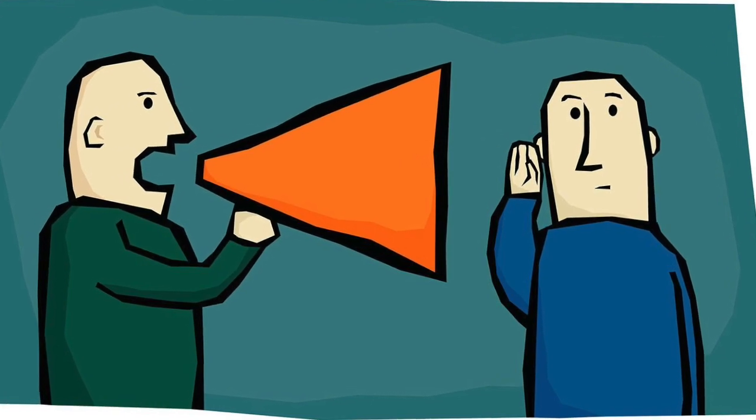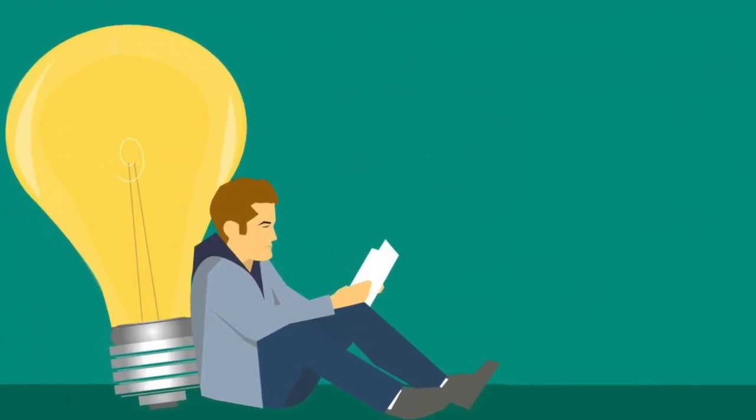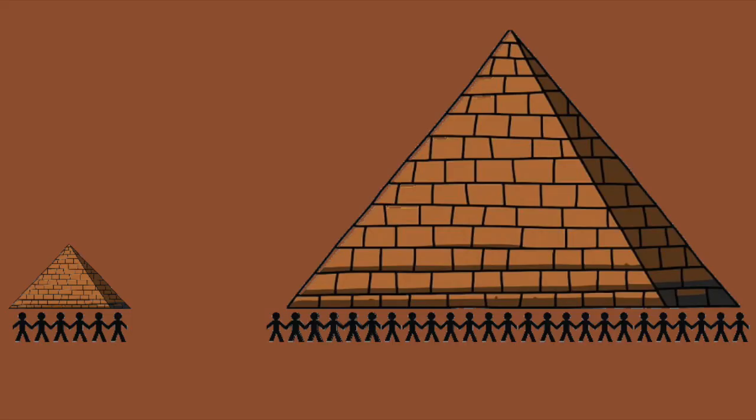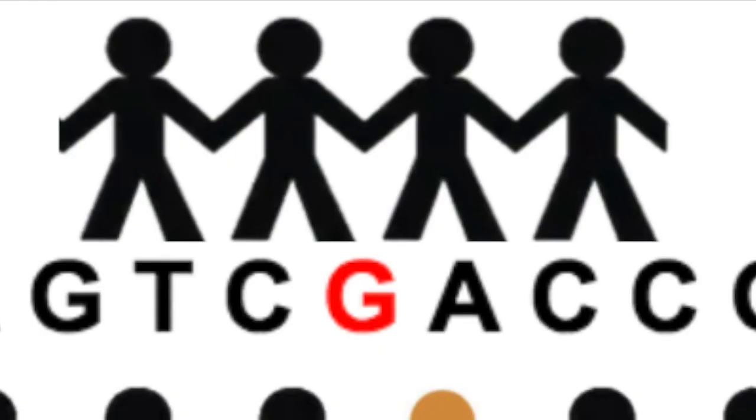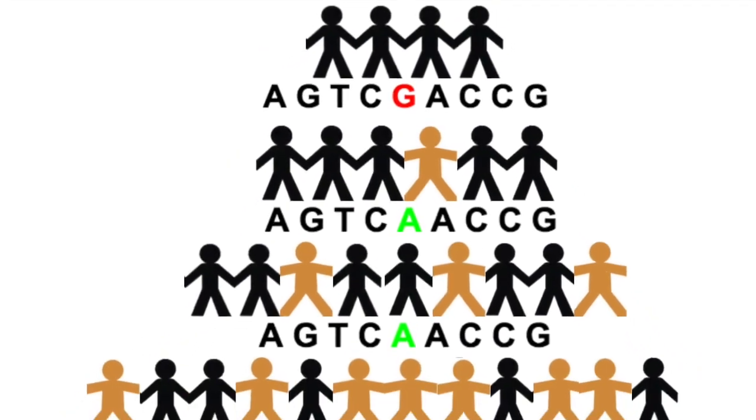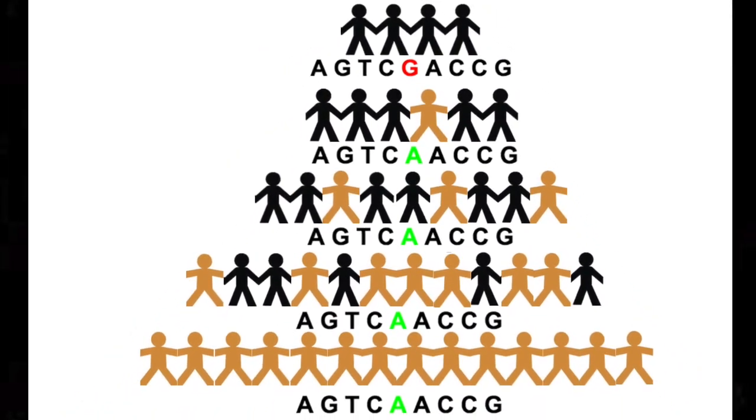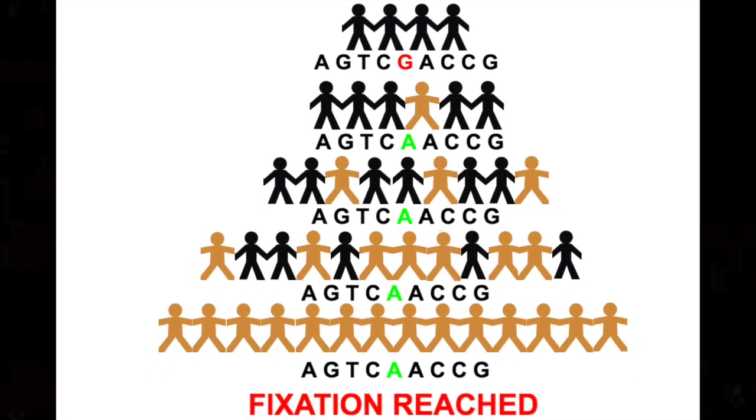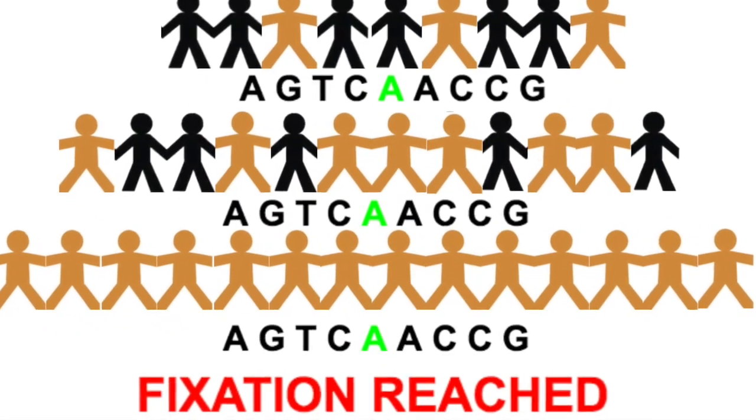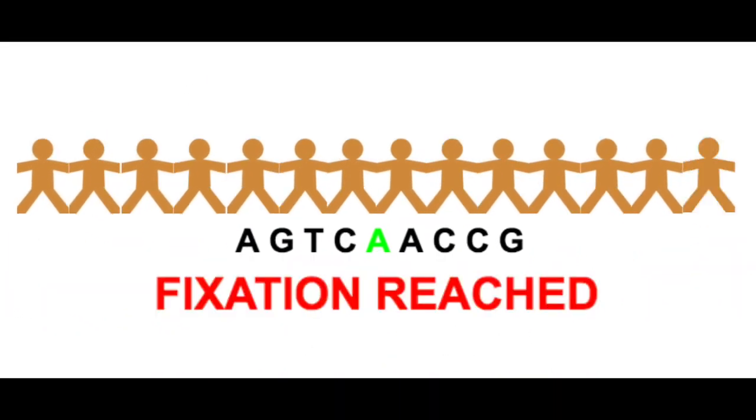Before we move on, let me explain what fixation means, because you will need to know to understand this in regards to substitution differences. Look at these two pyramids. At the base of these pyramids, you see two different populations of people. The top of the pyramid is going to represent fixation. That is when a new mutation arises and makes its way through the population generation after generation until this new mutation becomes fixed in that population, meaning everyone now has this new mutation. It has become a fixed substitution.